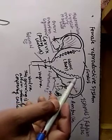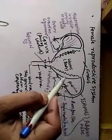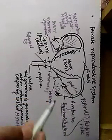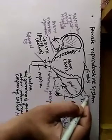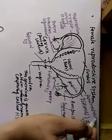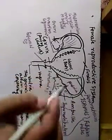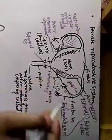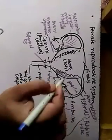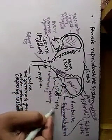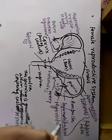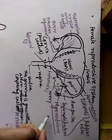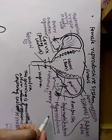Now let me elaborate on the wall of the uterus. The uterine wall has three layers. Going from outside to inside: the outermost layer is called the perimetrium. The perimetrium gives the shape to the uterus. After that comes the muscular wall — the second layer — called the myometrium. The myometrium is a muscular layer.